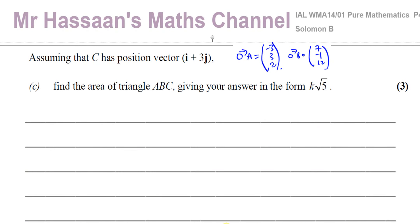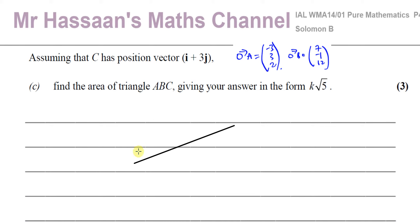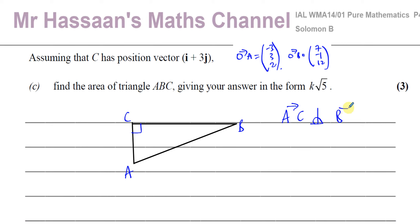For part C, we assume C has position vector I plus 3J and need to find the area of triangle ABC, giving the answer in the form K root 5. Since AC and BC are perpendicular, triangle ABC is a right-angled triangle at C. The area is a half times the magnitude of AC times the magnitude of BC.